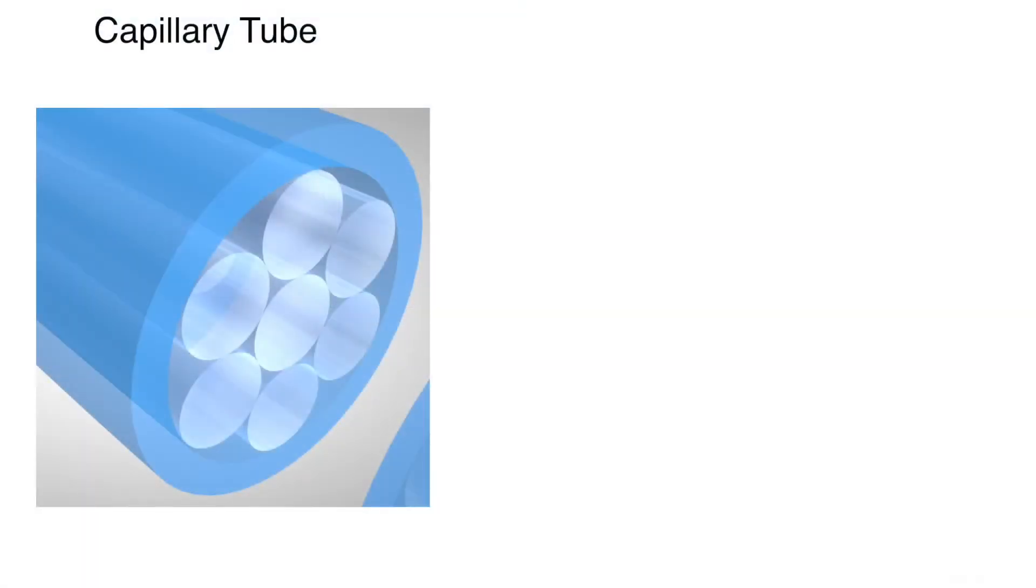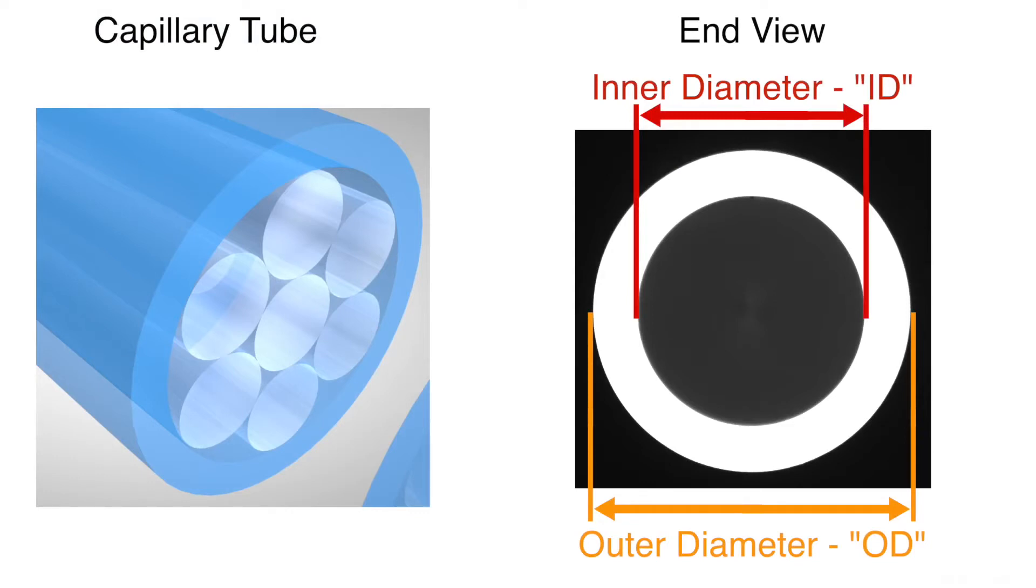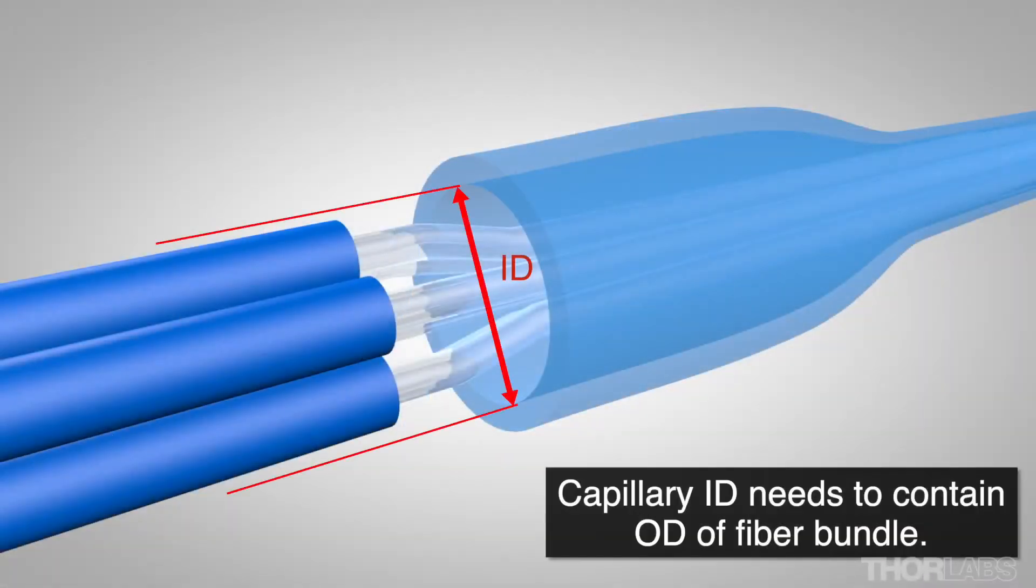To begin the pre-taper, a capillary tube appropriate for the application must be selected. The capillary should have an inner diameter before it is pre-tapered which can contain all of the coated fibers bundled together.